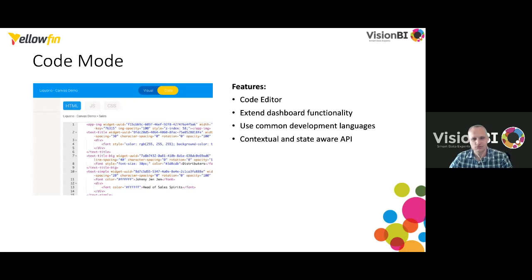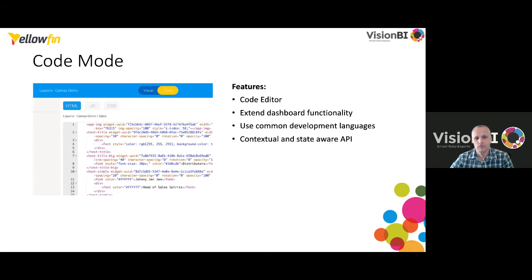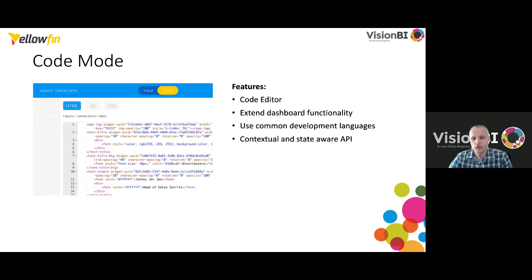All of the examples we show today are fairly generic so you should be able to use them easily in your environment. What we really hope to achieve is to get you thinking about what you can do with your dashboards to make them more actionable and user-friendly. Code mode is basically a code editor that allows you to make changes to components on your dashboard canvas. You can even create your own UI objects and functionality from scratch — giving you full flexibility and power.